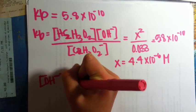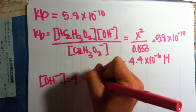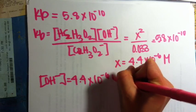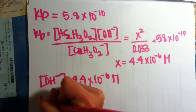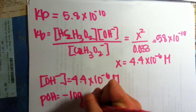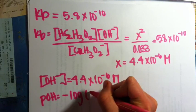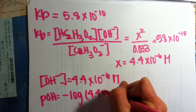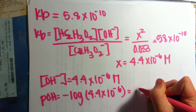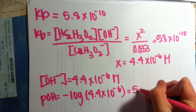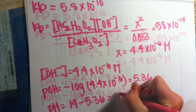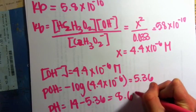Therefore, the hydroxide concentration is equal to 4.4 times 10 to the negative sixth molar. In order to find pOH, we take the negative log of that concentration, which yields 5.36. Therefore, the pH is equal to 14 minus 5.36, which is 8.64.